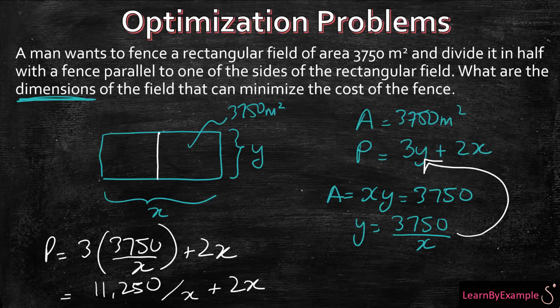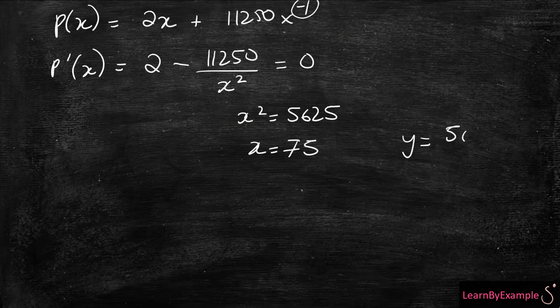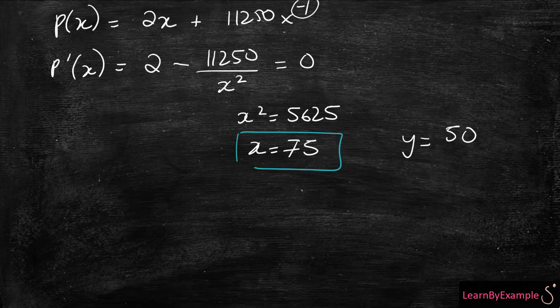We know what the Y equation is: it's 3,750 over X. If you just substitute that back in, you're going to be left with Y equals 50. So now we have the dimensions of X and Y, but we have one last check. We have to make sure that the equation is going to give us the minimum.